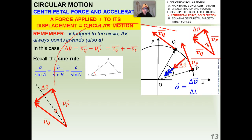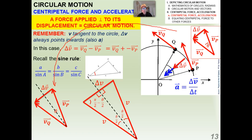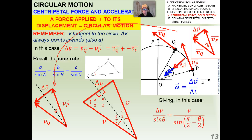Here's the same triangle made bigger. I'm going to bisect it with a dashed line. Because the dashed line bisects the angle, each half is theta over 2, and each side of the bisection is a right angle, making two right triangles. Since the angles of a triangle sum to pi, the remaining angle is pi over 2 minus theta over 2. Invoking the sine rule, I have delta V over sine theta equals V over sine of (pi over 2 minus theta over 2).